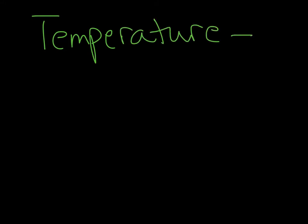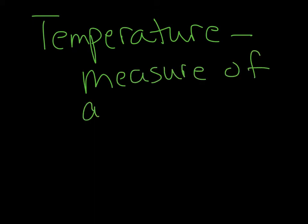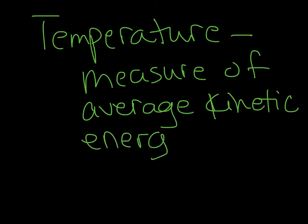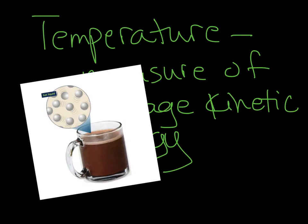Temperature is the measure of average kinetic energy of all the particles in an object. If I have a cup of hot cocoa, it has a high temperature, which means that the particles in the liquid are moving very fast and have a high average kinetic energy. It's going to feel hot to the touch.